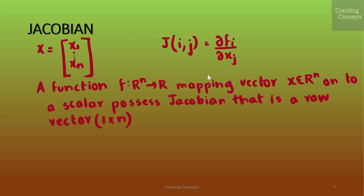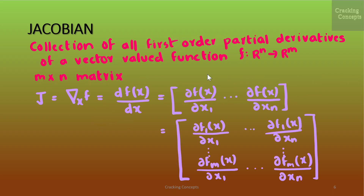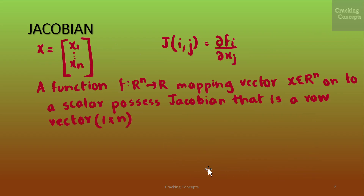As a special case, a function f mapping from ℝⁿ to ℝ, which maps a vector x belonging to ℝⁿ onto a scalar, has a Jacobian that is a row vector — a matrix of dimension 1×n.